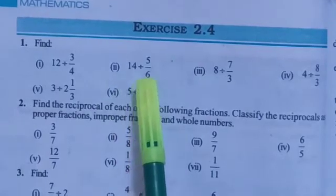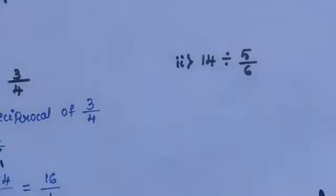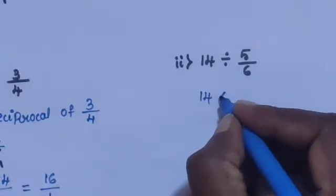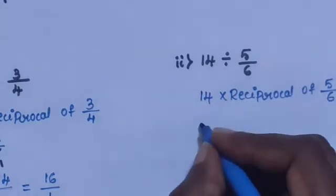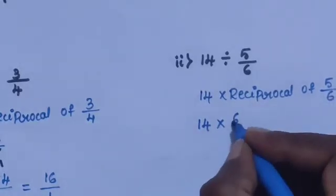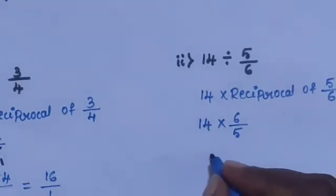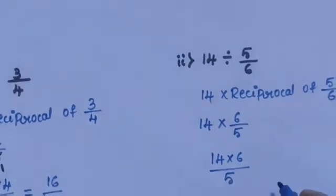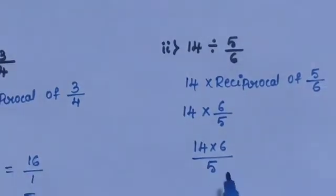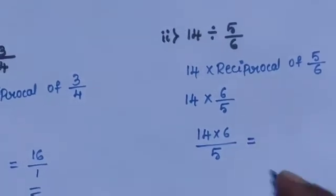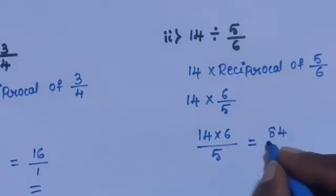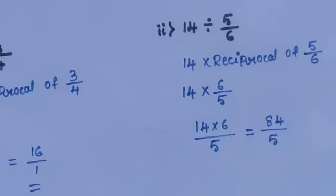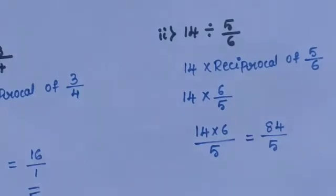Sub-question 2: 14 divided by 5 by 6. Using the same process, remove the division sign using the reciprocal of the fraction. 14 multiplied by the reciprocal of 5 by 6 is 6 by 5. Then multiply: 14 into 6 equals 84, divided by 5. So 84 divided by 5 is the answer.